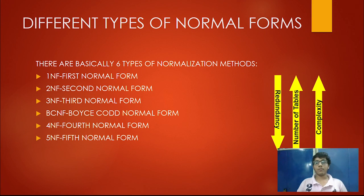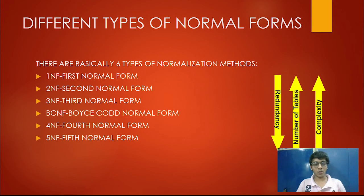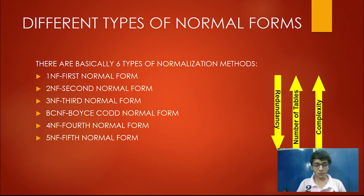There are six types of normalization forms: first normal form (1NF), second normal form (2NF), third normal form (3NF), Boyce-Codd normal form (BCNF), fourth normal form (4NF), and fifth normal form (5NF).